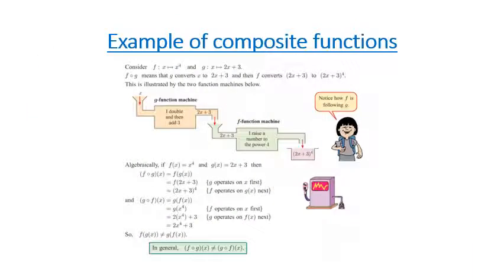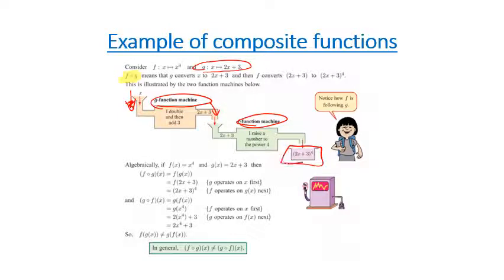So we've got fog — following on from g. If you look at this machine here, we take our g function. So x goes into our machine and it creates our g function. Then we put our g function into our f function, and we come out with our new function — we're getting a combination. So f times g will give us the f function of the g of x function.